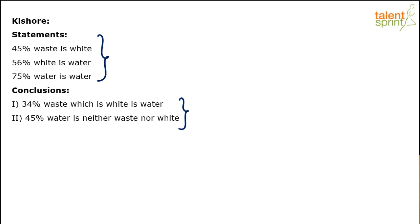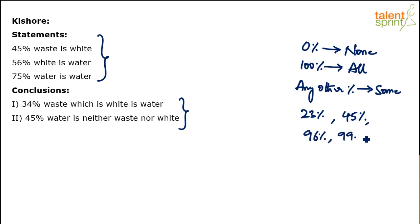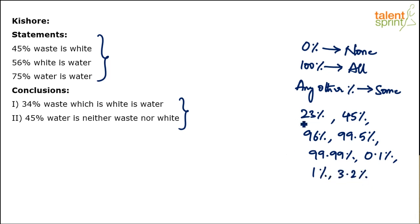We don't usually see percentages in syllogism questions, but if you've seen our advanced examples on syllogisms, we have covered such questions. Basically, any percentage given represents 'some' unless it is 0% or 100%. So 23%, 45%, 96%, 0.1% — anything between 0 and 100 should be considered as 'some'.